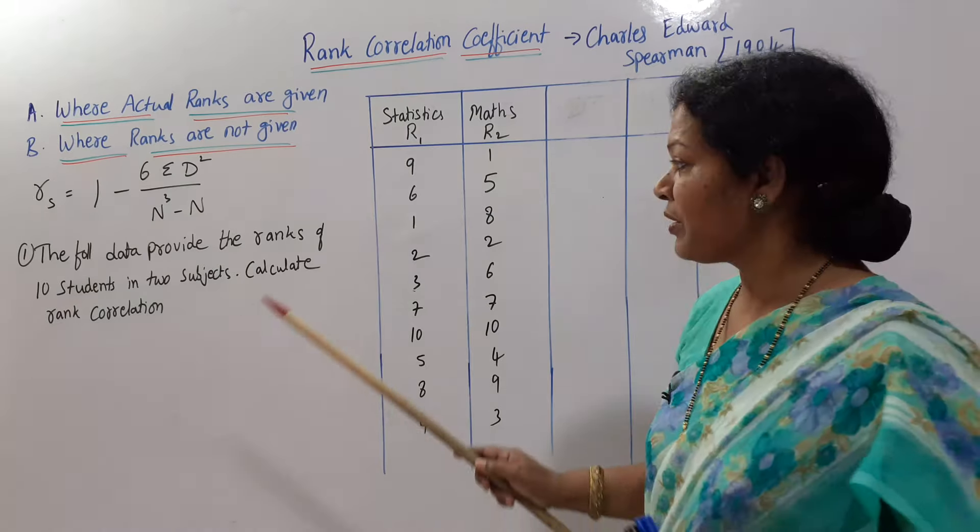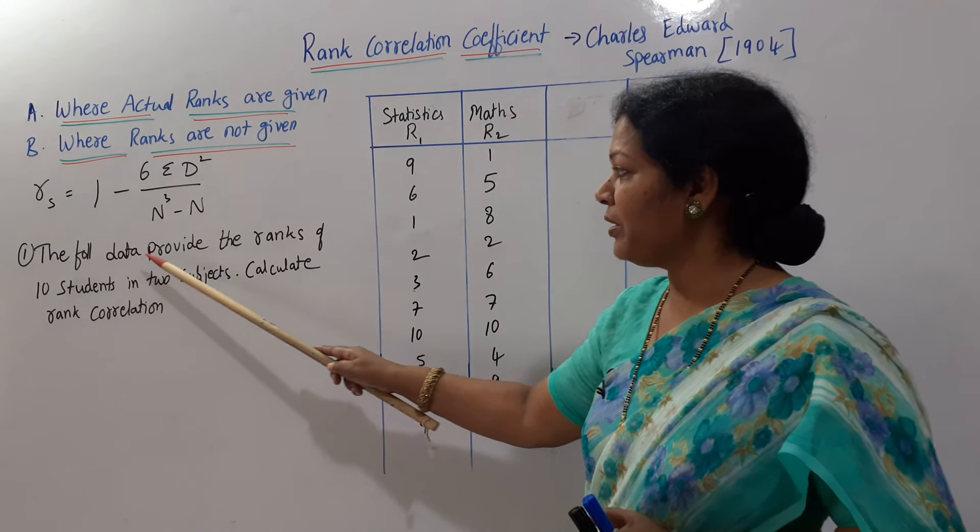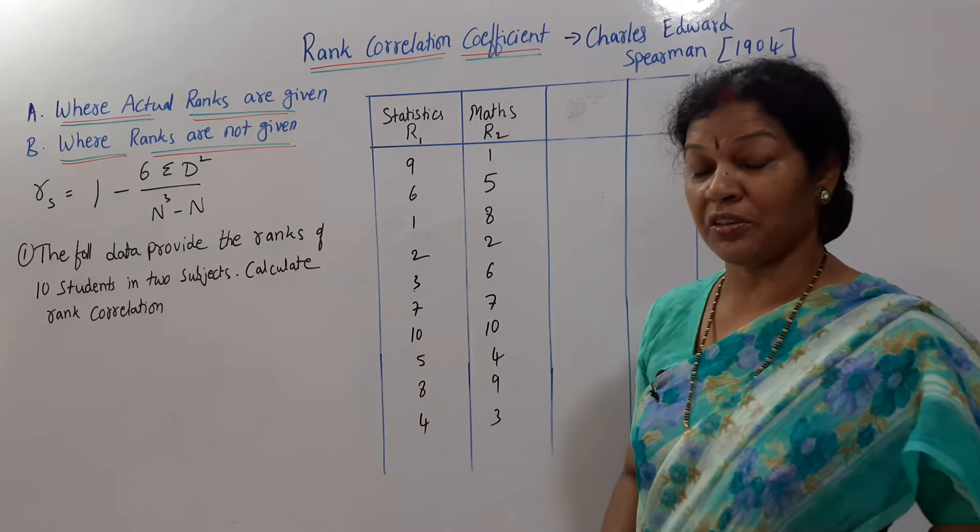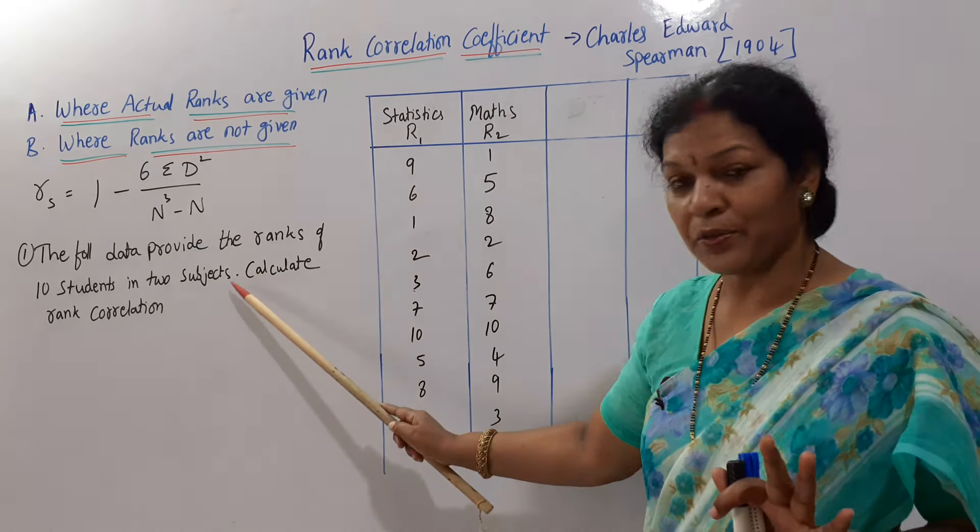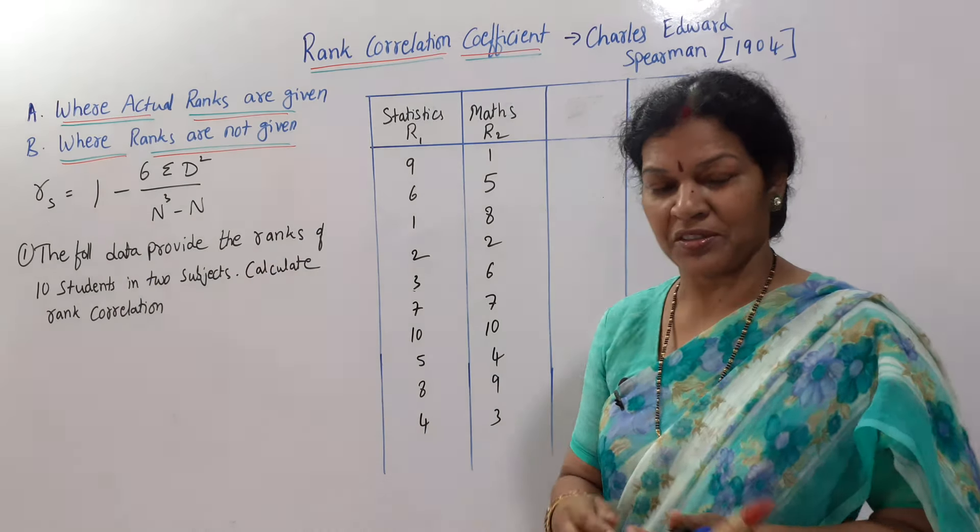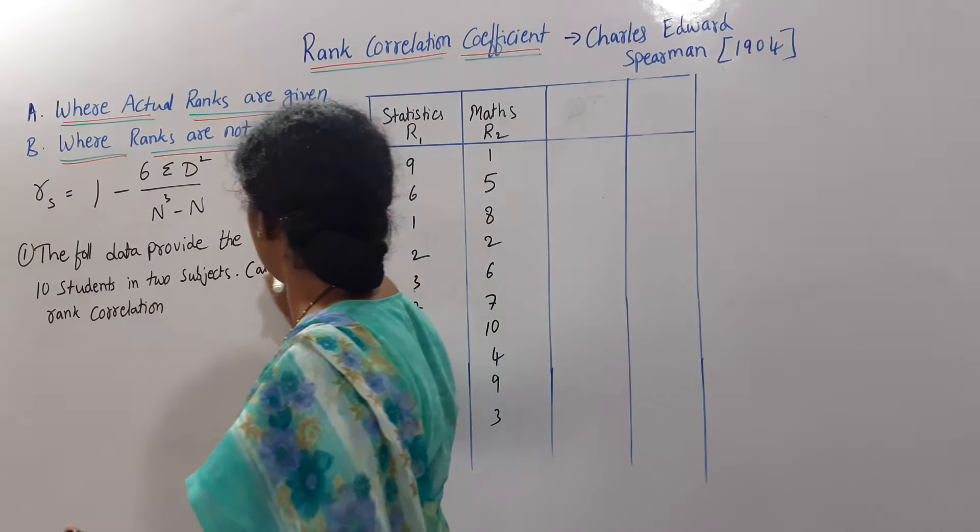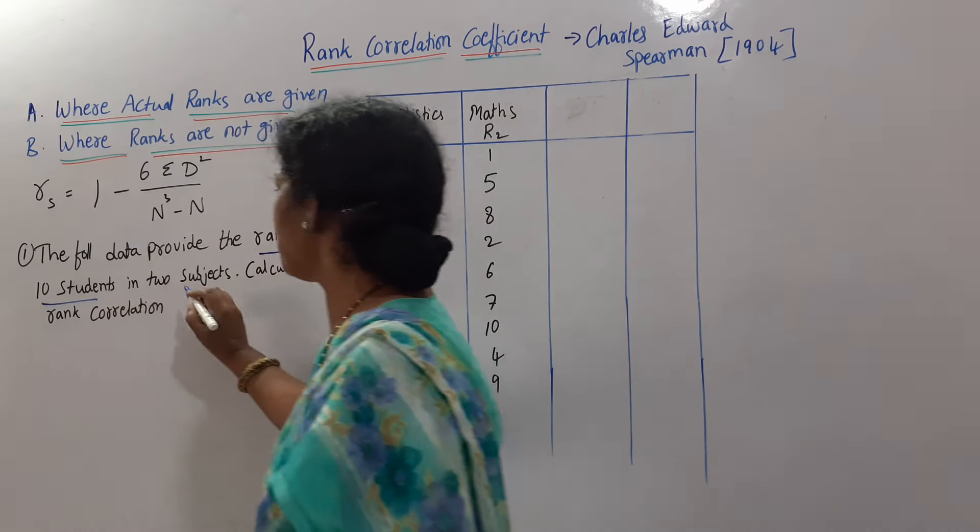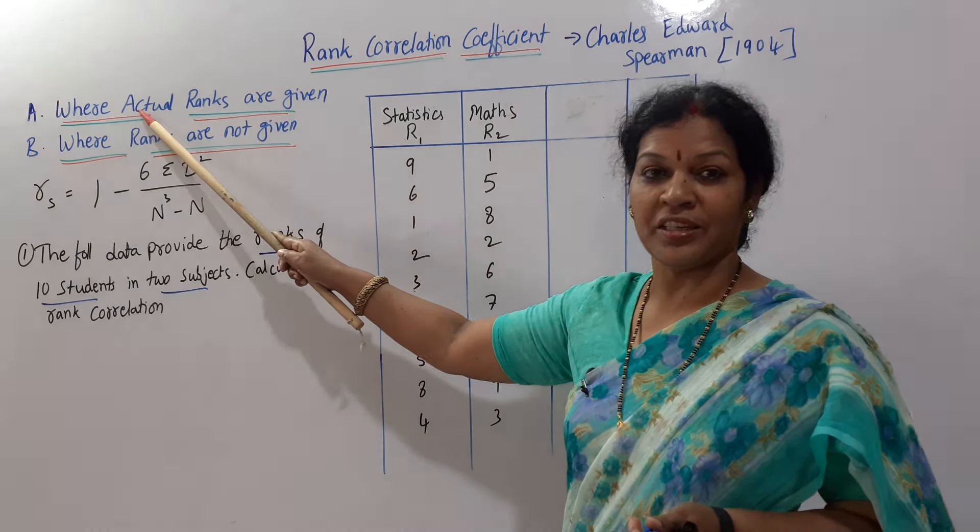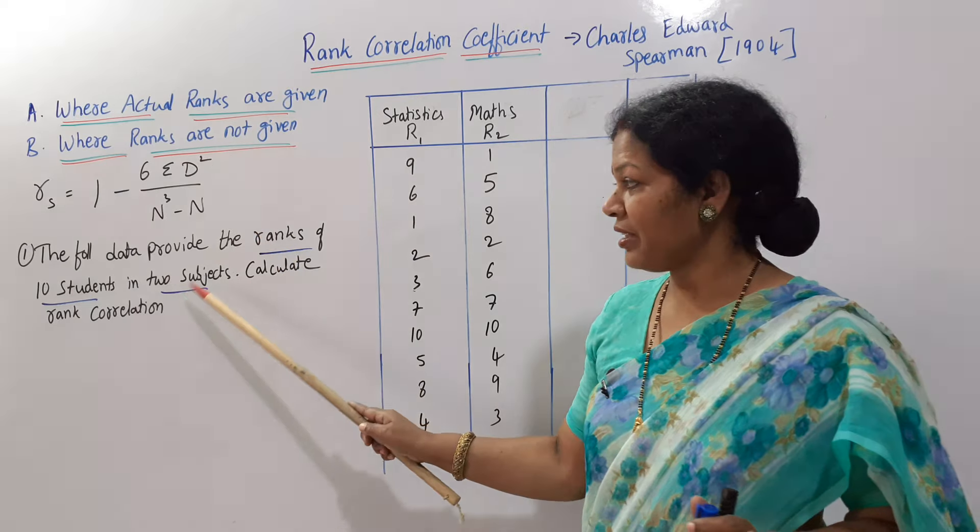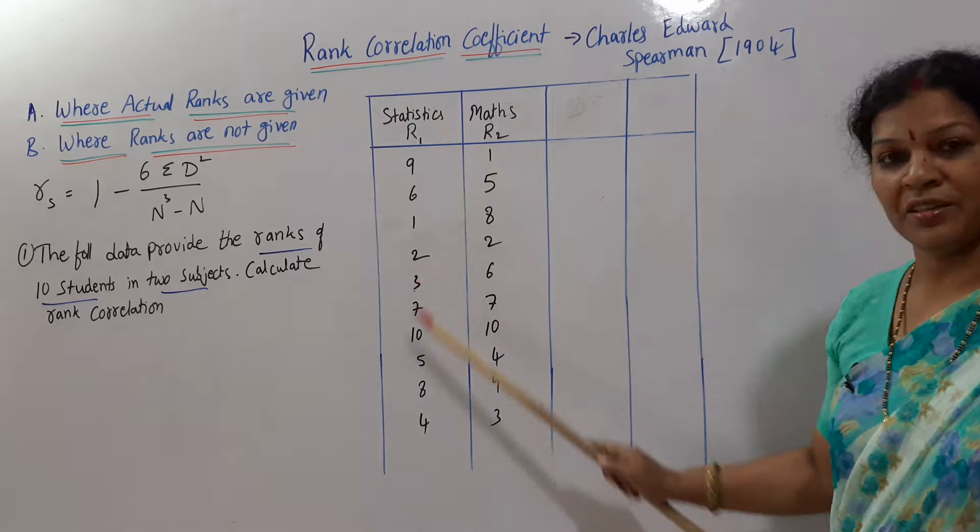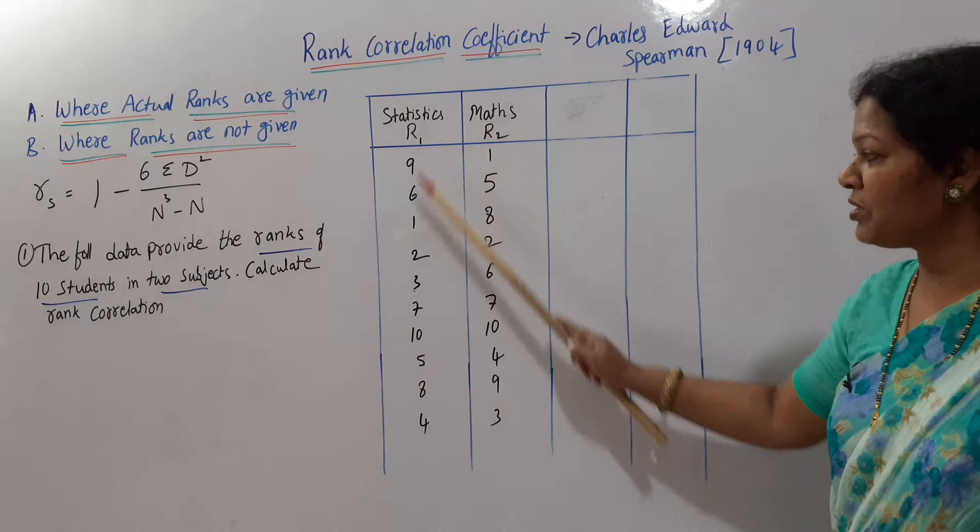Now the problem. The following data provide the ranks of 10 students in two subjects. Calculate rank correlation. Read this carefully—the following data provide the ranks of 10 students. Ranks are given. Ranks of 10 students in two subjects. Calculate rank correlation. This is the case where ranks are given.